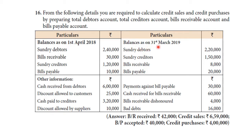Balance as on 31 March 2019 — closing balance: Sundry debtors $2,20,000; Sundry creditors $1,50,000; bills receivable $8,000; bills payable $20,000.